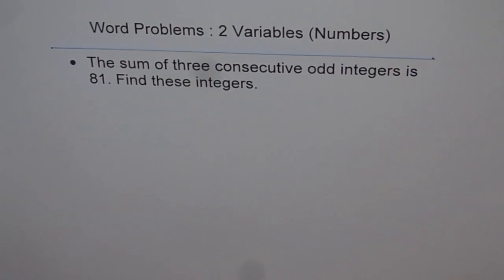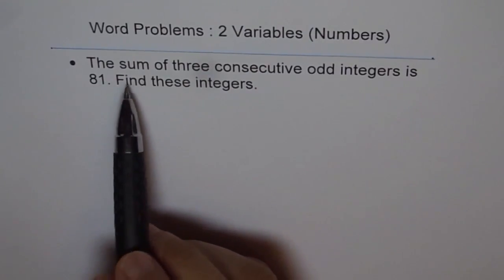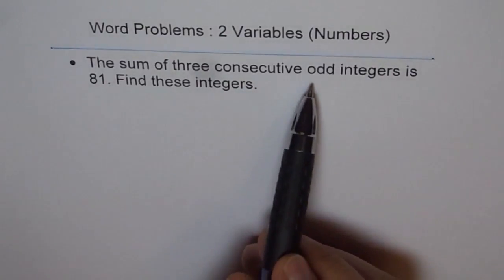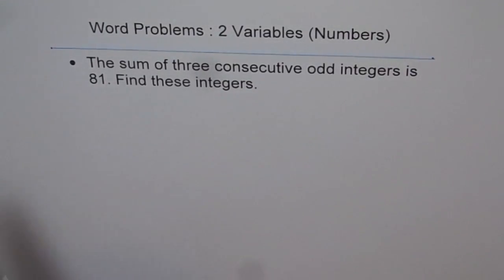This is a word problem in two variables involving numbers. The question here is: the sum of three consecutive odd integers is 81, find these integers. This is an interesting problem. It may not have two variables when you say three consecutive - you may think about three integers, so it could have three variables.